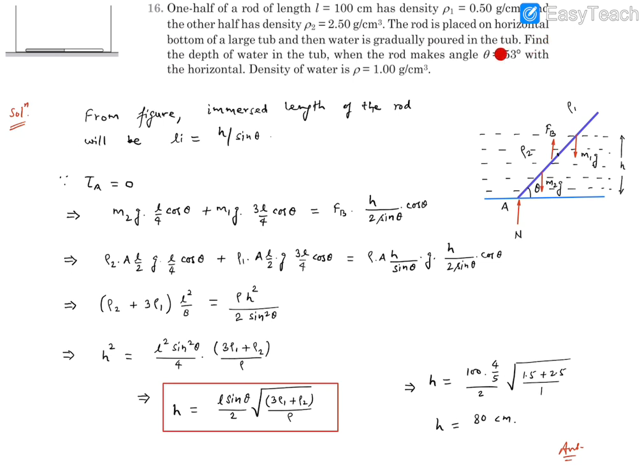The rod is placed on the horizontal bottom of a large tub and then water is gradually poured into the tub. Find the depth of water in the tub when the rod makes angle θ which is 53 degrees with the horizontal. Density of water is known to us.